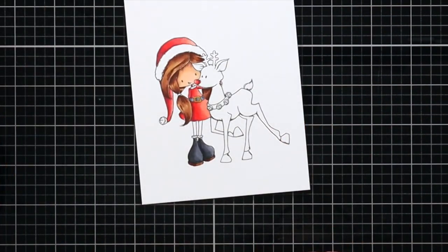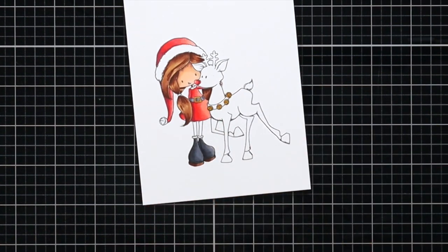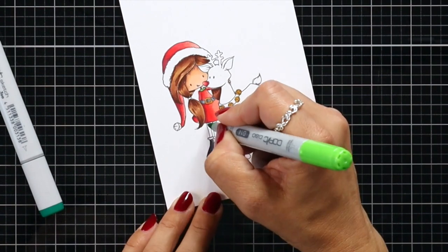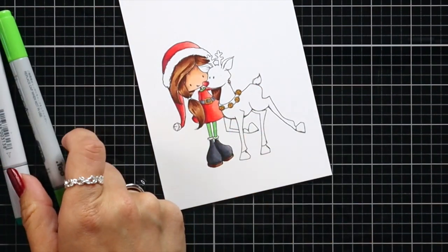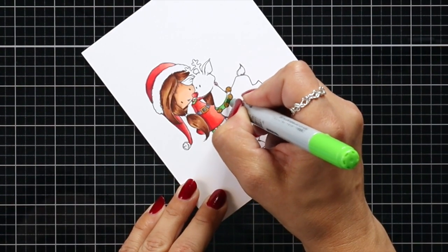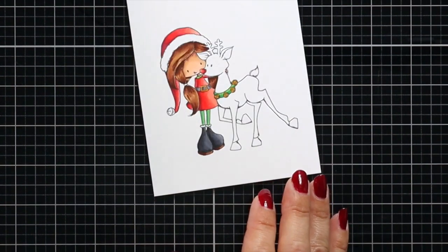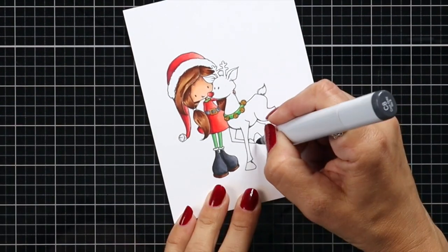I used the same color for the bells that I did for the belt buckle, which is the YR23. Then I moved on to the legs and the collar of the dress and I used G16 and G14. That was one of the things I kind of changed my mind on. I wanted to leave them white, but since my red did bleed onto that collar a little bit, I just decided to color it green and it still works out with the whole Christmas theme.